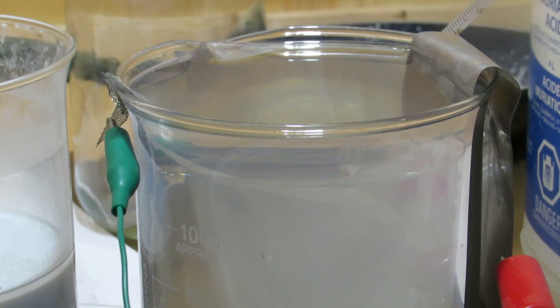As a side note, having too high of current will cause hydrogen to form at the negative electrode, which is undesirable, so a lower current must be used.